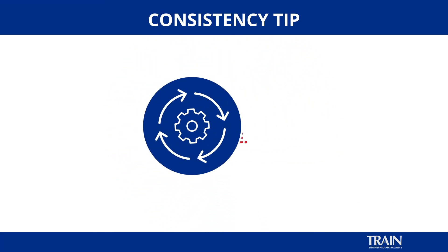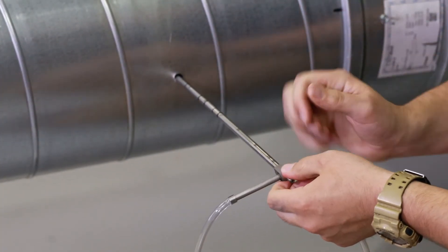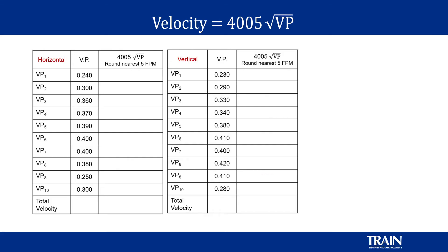We take a static pressure at our traverse location. We will remove the hose on the total pressure port of the pitot tube and record our reading. Now that we have finished our pitot tube traverse, we need to ensure that every single velocity pressure is converted into a velocity. That calculation is the square root of the velocity pressure times 4005. This velocity is then calculated for each individual velocity point that was measured in the duct.